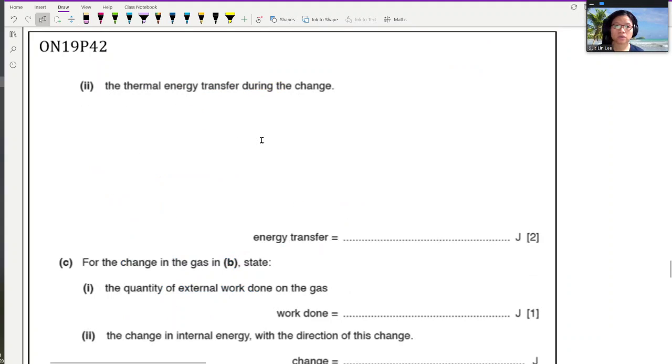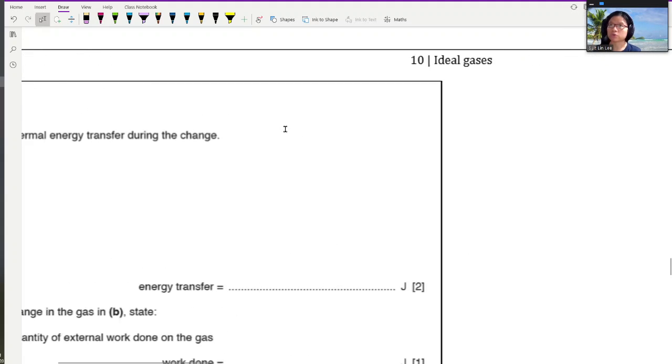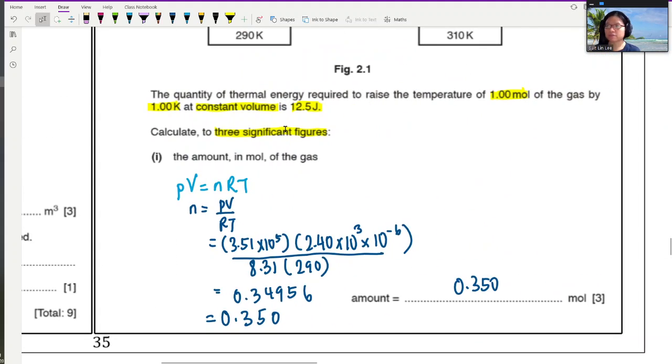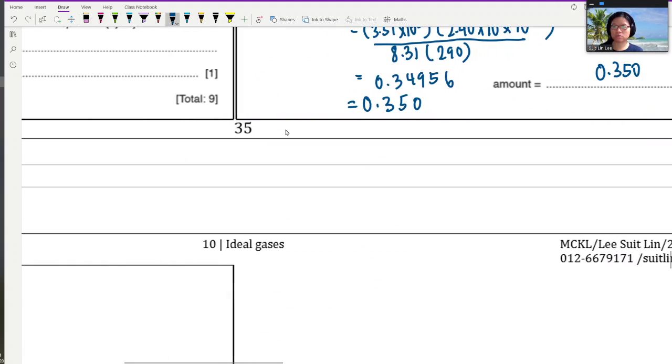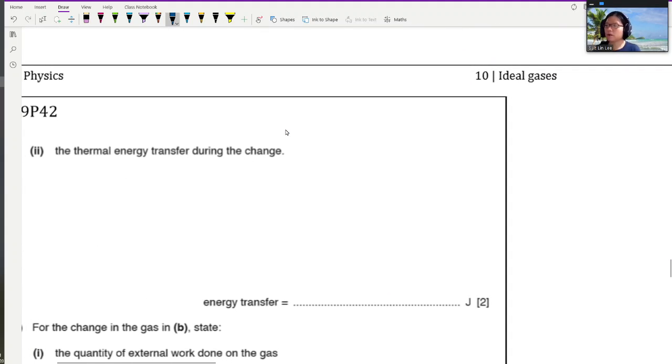That is part B, part 2, Roman letter 2. The thermal energy transfer during the change. Let's go back to the question. To find the thermal energy transfer, it says that I need 12.5 J for every mole by every Kelvin. So I guess we multiply. We know that we have 0.35 mole and we know that the temperature change is 290K to 310K. So I'm just going to multiply instead of quoting an equation. So the amount of energy transfer or heat transfer, let's say I put Q,